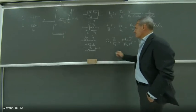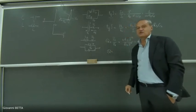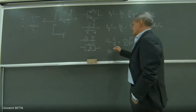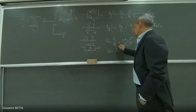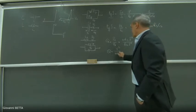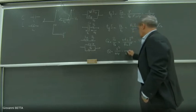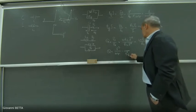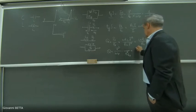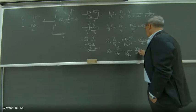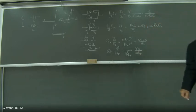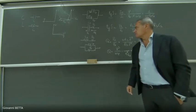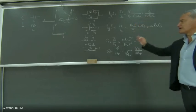Nel caso di un equivalente parallelo, il fattore di merito si calcola come Q = R_P/(ωL_P). Quanto più è alto il fattore di merito, tanto più l'induttore si avvicina ad essere un induttore ideale — cioè un induttore in cui la potenza attiva è trascurabile rispetto alla potenza reattiva. Anche in questo caso posso passare da un parametro all'altro senza problemi.